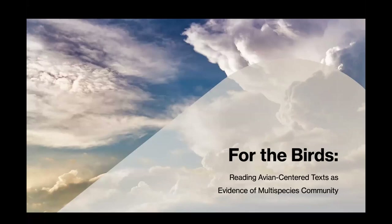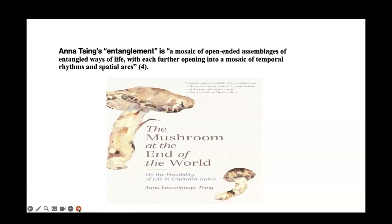This is titled 'For the Birds: Reading Avian-Centered Texts as Evidence of Multispecies Community.' My research tends to focus on animal studies, a multidisciplinary field that looks at representations of animals in all kinds of media, as well as actual relationships that humans have with animals. Especially the idea of entanglement, popularized by Anna Tsing in her book The Mushroom at the End of the World, which defines entanglement as a mosaic of open-ended assemblages of entangled ways of life, each further opening into a mosaic of temporal rhythms and spatial arcs. Humans are entangled with everything from invasive species to viruses to bacteria in our guts to pets — communities we can't really separate ourselves from.